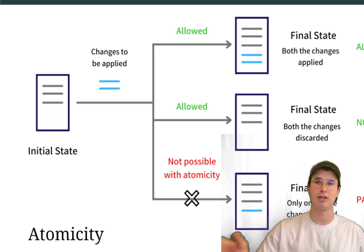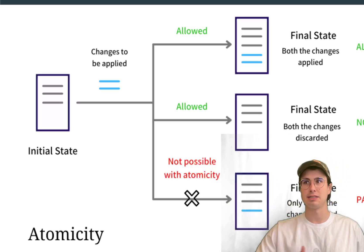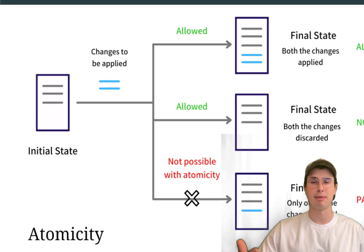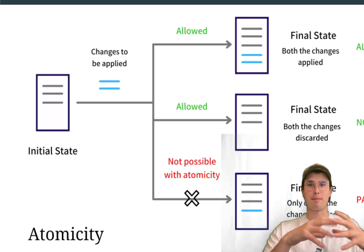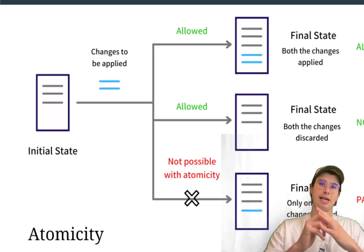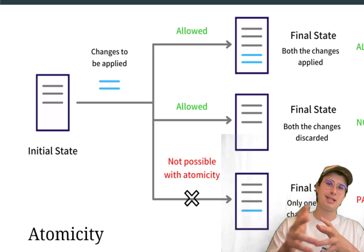Which then makes the database system easier to understand and manage because you have clear guidelines of how to interact and manage it. And then you also have error handling. So atomicity durability properties assist in handling errors gracefully by making sure that incomplete transactions, like in this example, don't affect the database state.